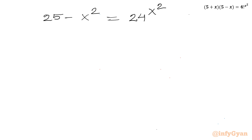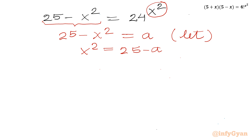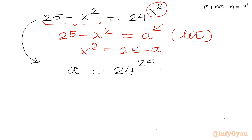Now I will use substitution. I will consider our left hand side: 25 minus x squared. Suppose it is equal to a. So from here I can write the value of x squared — it will be 25 minus a. I will apply this substitution in the right hand side. Left hand side as per our substitution is a, right hand side is 24 raised to the power 25 minus a.